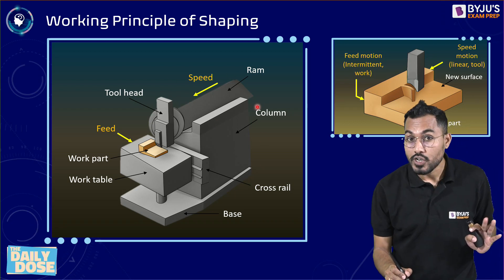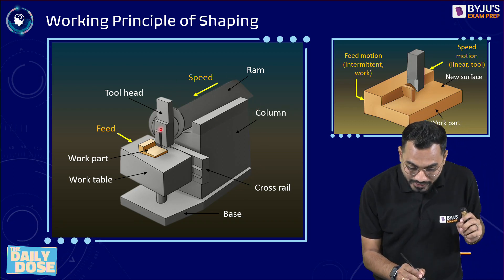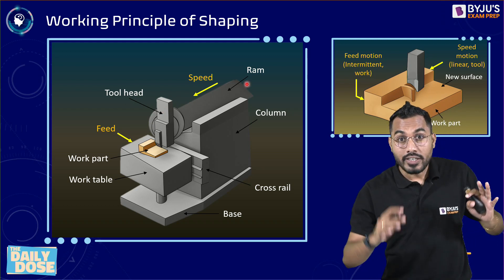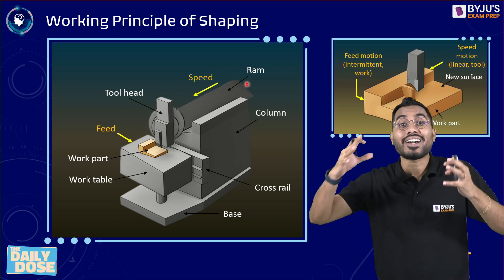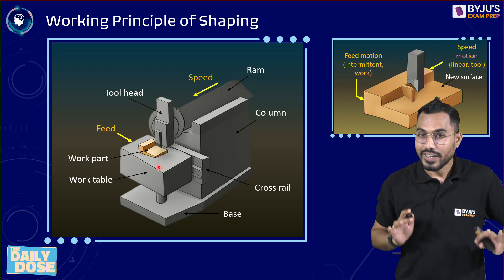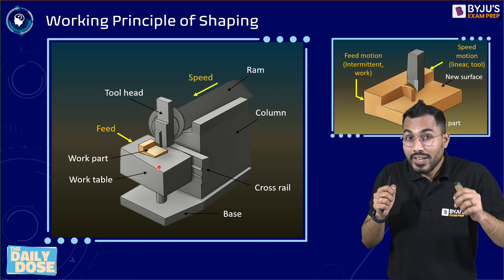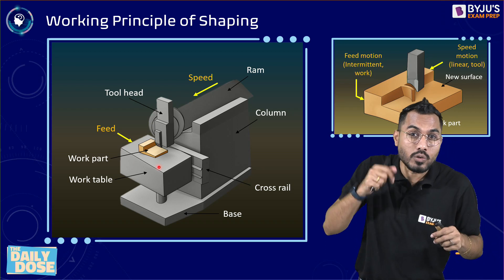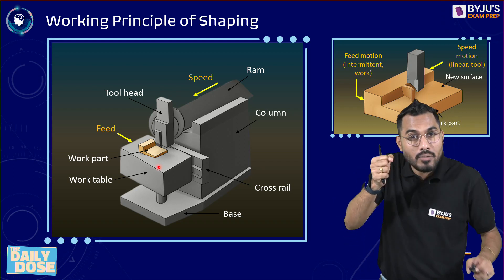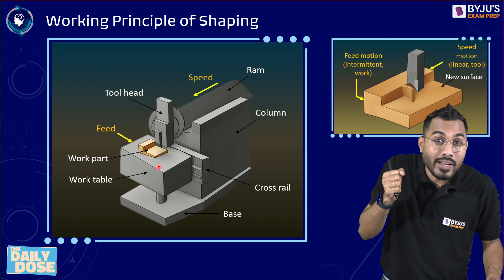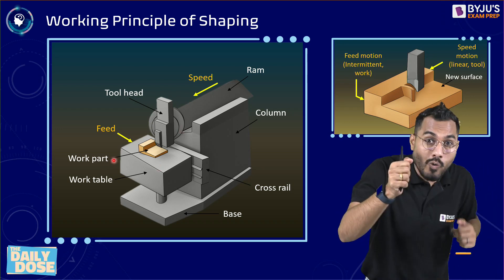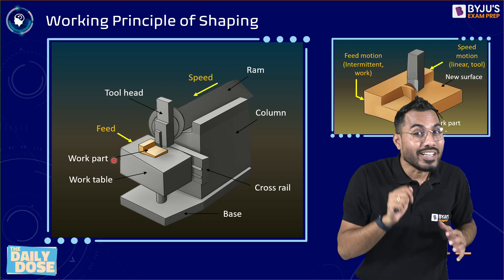Shaping operation is basically a single point cutting tool used to generate a flat shape of a component. If you observe, this is exactly a shaping machine or shaper. The single point cutting tool is attached to the tool head, which is attached to the RAM and a crank mechanism. The workpiece is attached to the work table. Reciprocating motion is given to the tool — moving in the forward direction and then the backward direction.